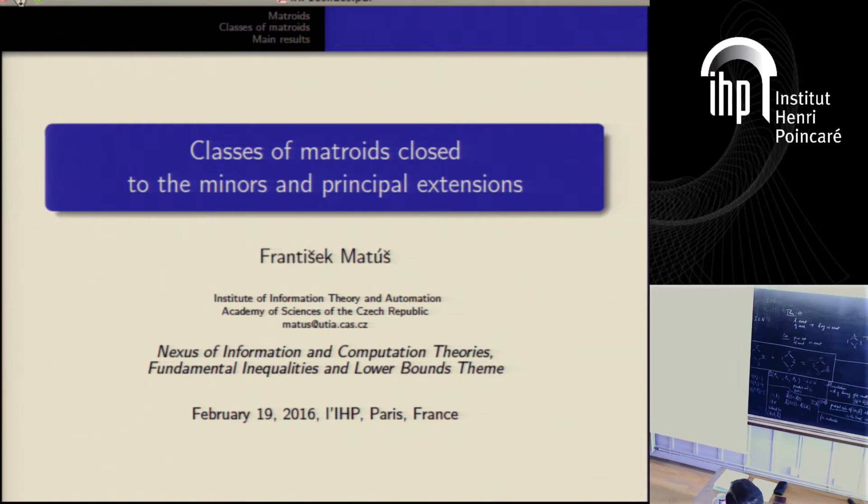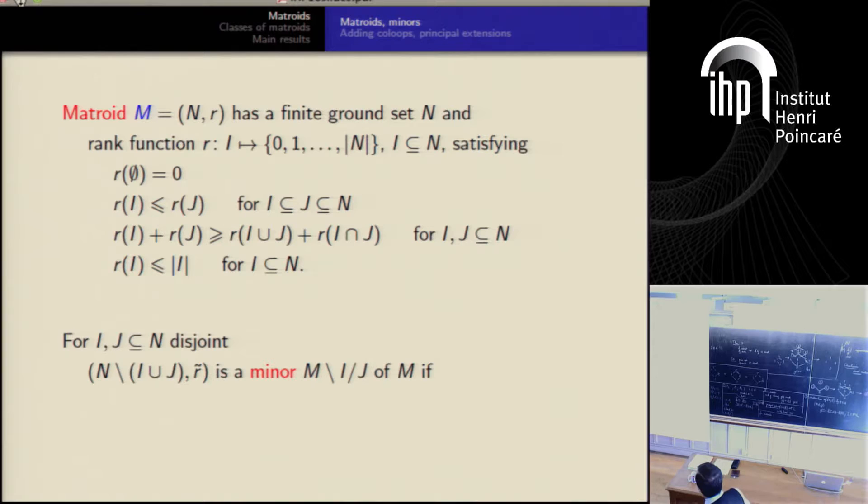So I studied such classes, which this doesn't cover the linearity over finite fields, but these are interesting classes. And this is the most, for me, the most interesting representant. This is just to repeat what is matroid, and what is a minor? Minor is a sub-configuration, natural sub-configuration.